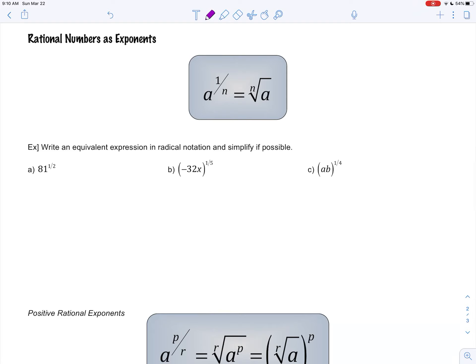Next, we're looking at rational numbers as exponents. Rational numbers refer to fractions. You can see that the denominator refers to an index of a radical. So a to the 1 over n is the nth root of a to the 1st power. We don't usually write that. So let's try some examples.